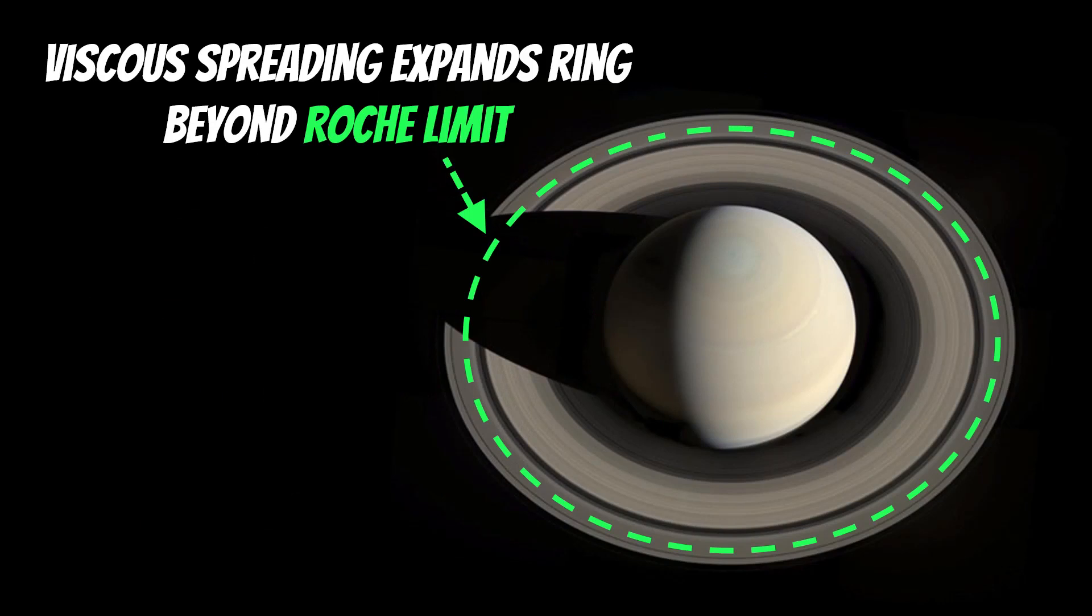If you've got that Roche limit, so that is that limit where moons could form if anything went beyond that, these collisions between the particles and that radial movement and the viscous spreading goes beyond that. At that point, you can start to have moons forming. It's known as viscous spreading, so like a viscous fluid really. It would spread outwards due to this interaction between the individual particles. This is important for the mid-sized moons, because we believe they formed from the rings.